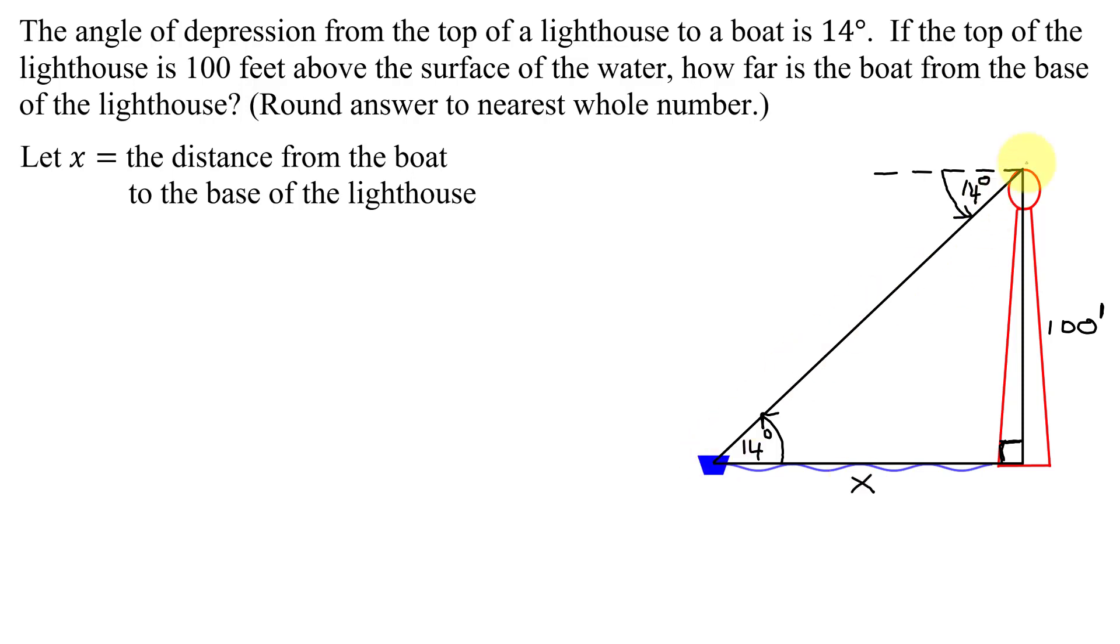And now in this right triangle, I know one angle, one side. I need to find a second side. So I need to use my mnemonic of SOHCAHTOA, remember, which means sine is opposite over hypotenuse, cosine is adjacent over hypotenuse, and tangent is opposite over adjacent.